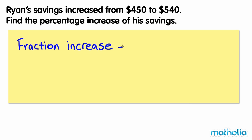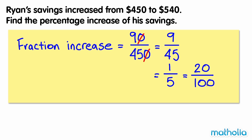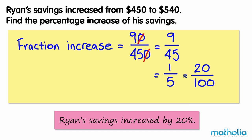The fraction increase is equal to the savings increase amount over the original amount. 90 over 450 equals 9 over 45, which is one-fifth in its simplest form. To express this as a percentage, let's find an equivalent fraction with a denominator of 100. Multiplying the numerator and the denominator by 20 gives 20 over 100. 20 one hundredths equals 20%. So Ryan's savings increased by 20%.